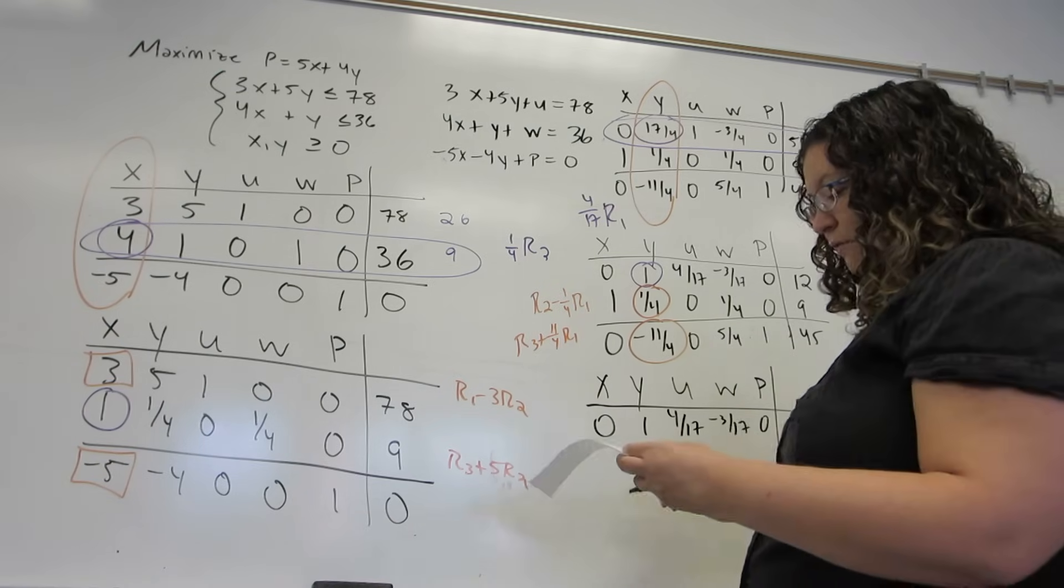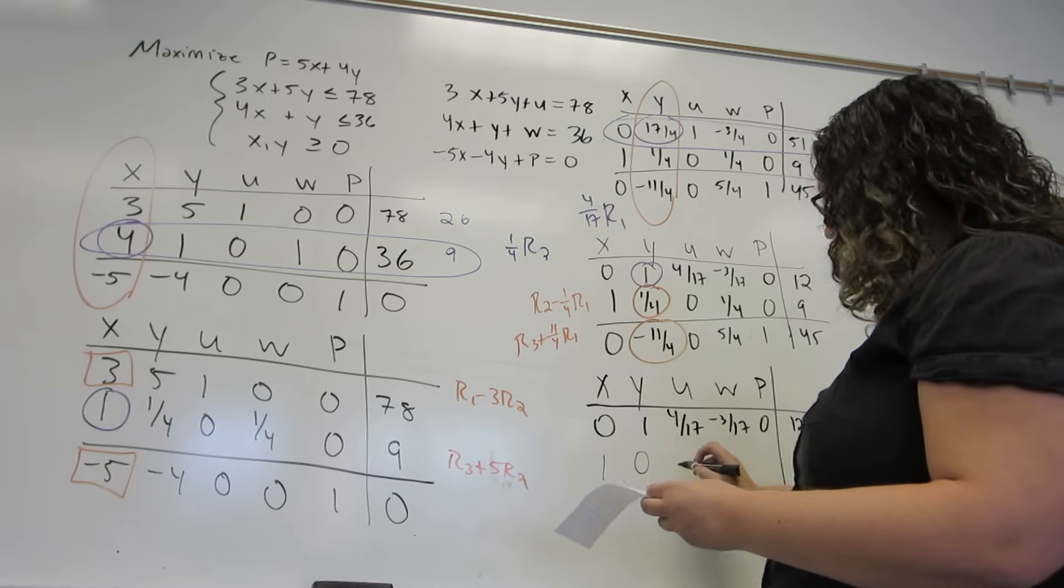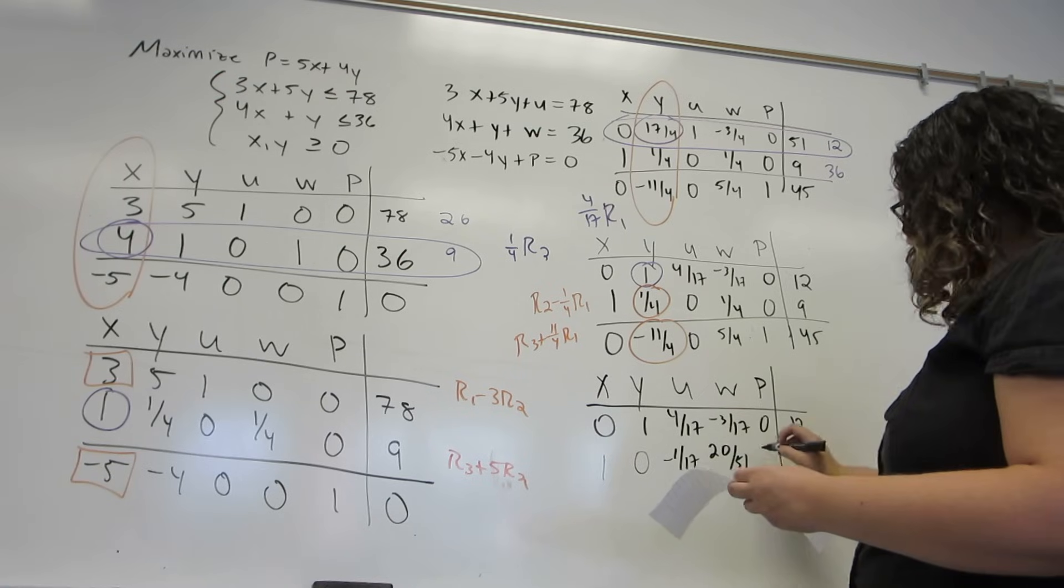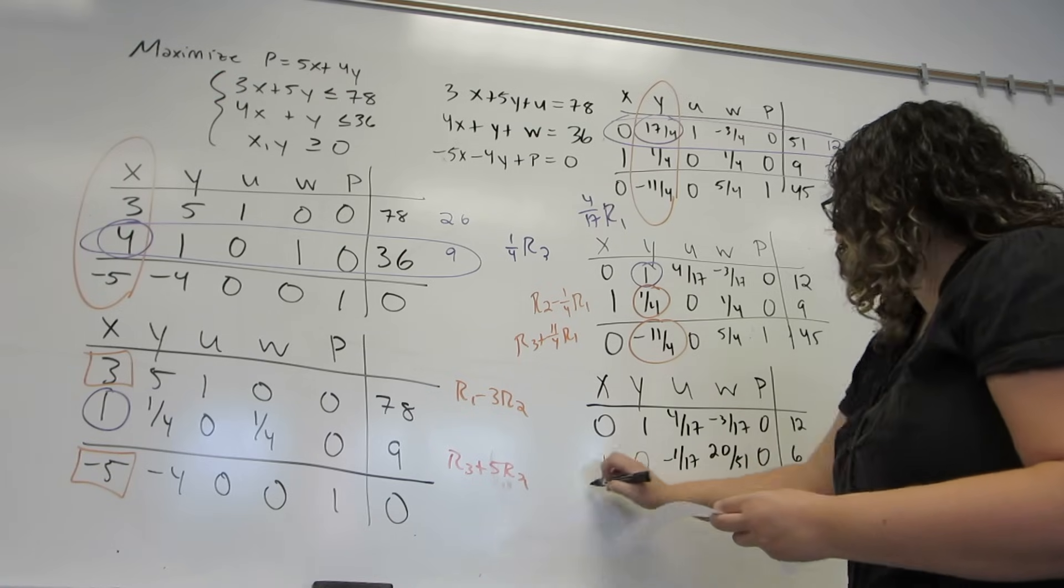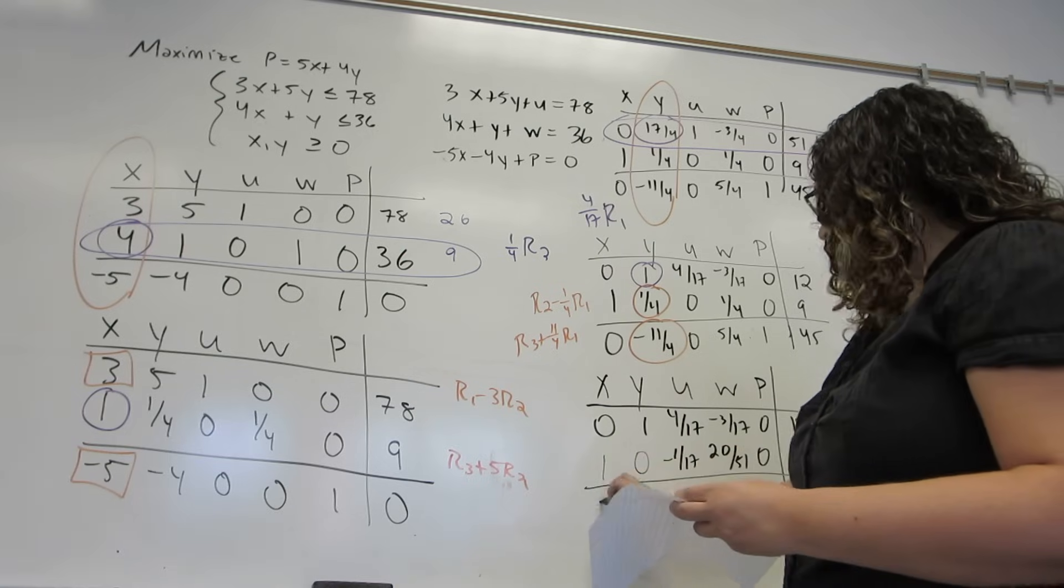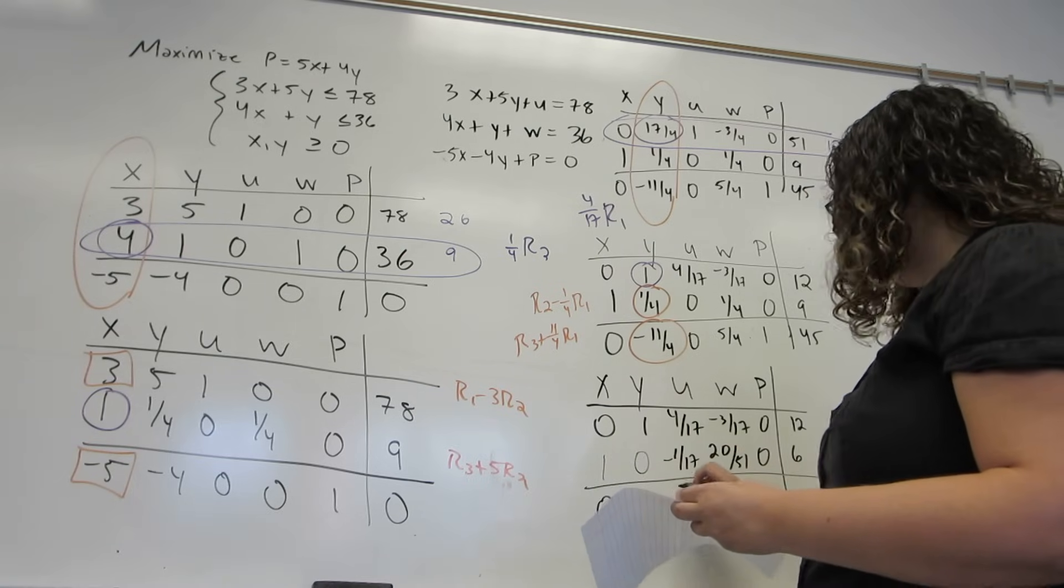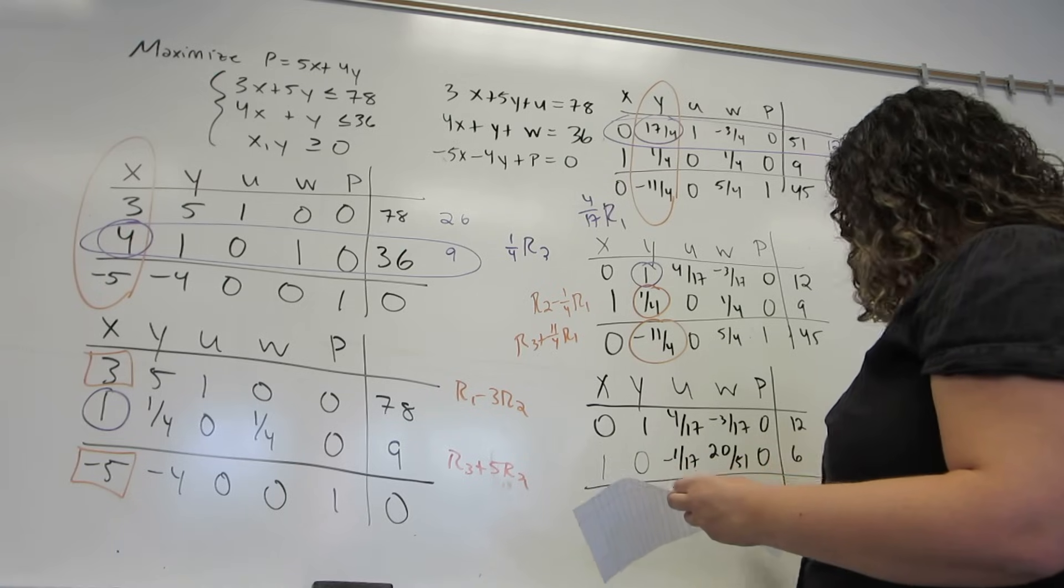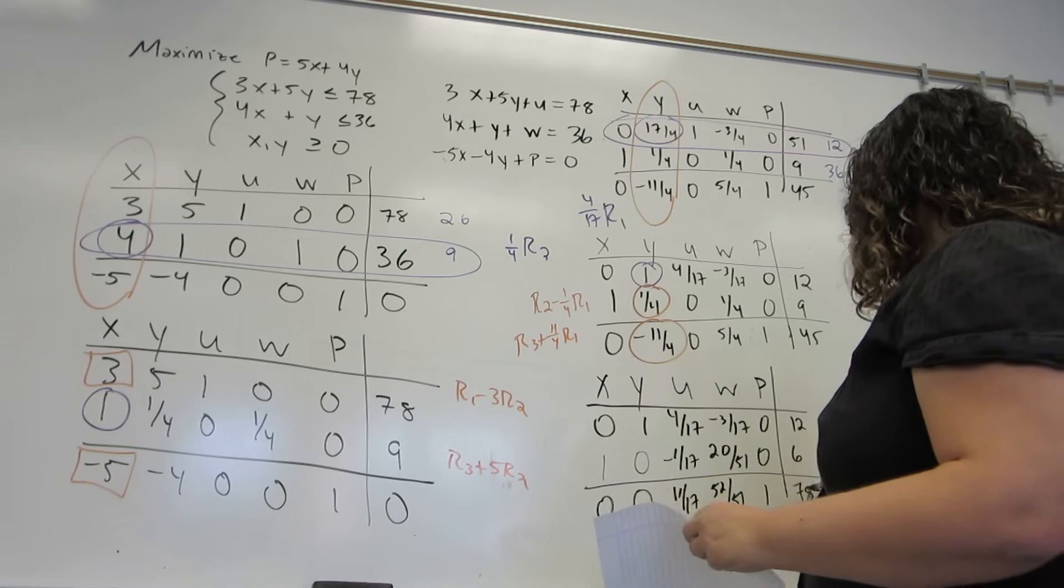The second row turns into 1, 0, minus 1 seventeenths, 21 51sts, 0, and 6. And the last row becomes 0, 0, 11 seventeenths, 52 51sts, 1, and 78.